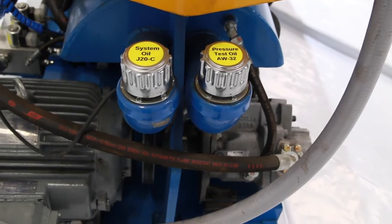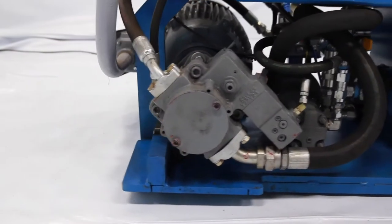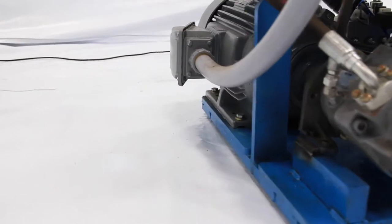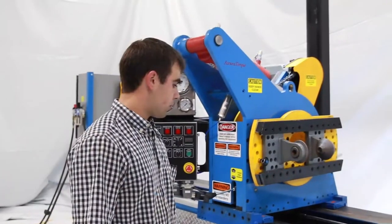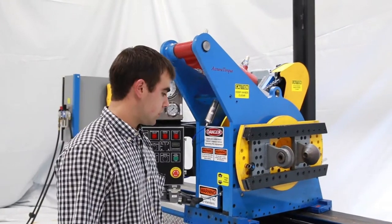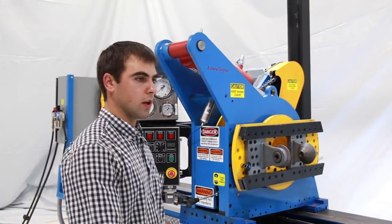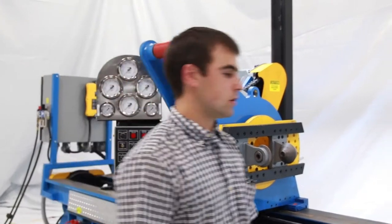Pressure testing oil is kept separate from the operating oil for cleanliness. The third reservoir, which is the biggest, numbering 250 gallons, is used to collect the waste oil when disassembling the cylinder.